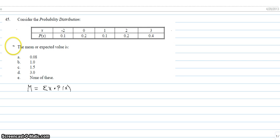The mean or expected value is A, 0.08, B, 1, C, 1.5, D, 3, or E, none of these.